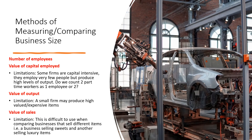We're now looking at methods of measuring and comparing business sizes. The first method is number of employees — we're simply measuring the amount of employees that a business employs. The second method is value of capital employed, which is the amount invested by businesses and the amount that they produce from that investment. The value of capital employed is basically your current assets and non-current assets together.